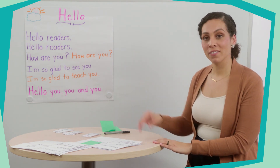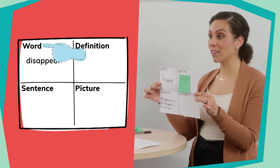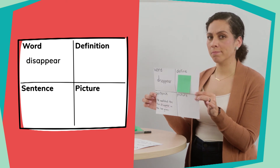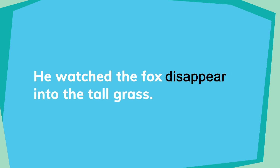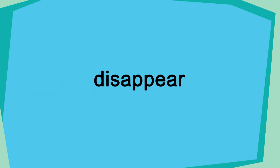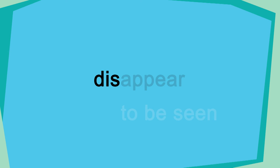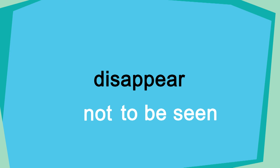Our next word is the word 'disappear.' Write the word disappear in your Frayer model organizer and listen to me use it in a sentence: he watched the fox disappear into the tall grass. Add that sentence and think about what disappear means. The word 'appear' in disappear means to be seen. When I add the prefix 'dis' to the word, it means 'not.' So if 'dis' means not and 'appear' means seen, then 'disappear' means to not be seen.